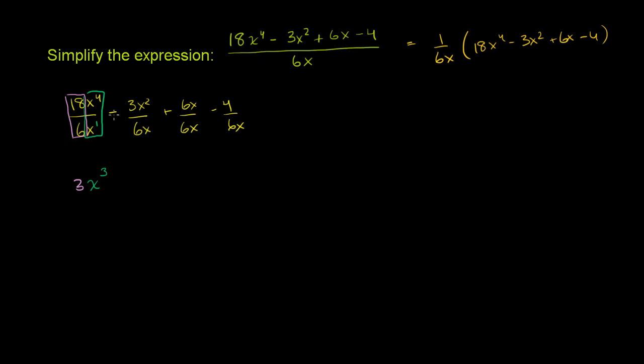Then we have this coefficient, or these coefficients. We have negative 3 divided by 6. So I'm going to do this part next. Negative 3 divided by 6 is negative 1 half. Negative 1 half.